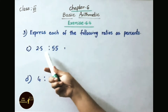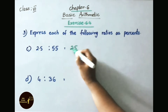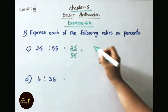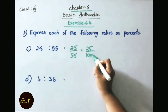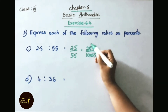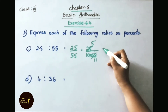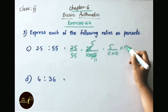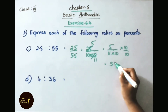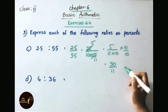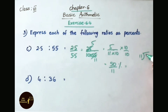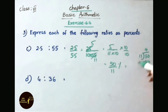Question C: 2.5 is to 55. Written as 2.5 by 55. To remove the decimal, write as 25 by 10 into 55, giving 25 by 550. Simplifying using the 5 times table: 25 divided by 5 is 5, and 550 divided by 5 is 110, giving 5 by 110, then 5 by 11 into 10. Multiplying numerator and denominator by 10 gives 50 by 100. Dividing 50 by 11: 11 fours are 44, remainder 6. So the answer is 4 and 6 by 11 percent.